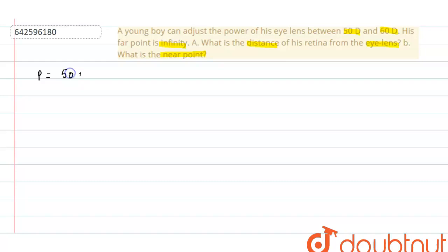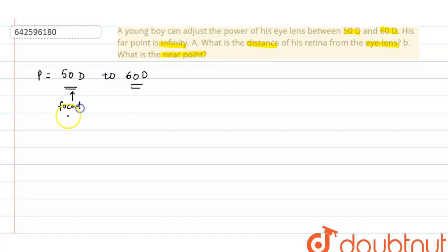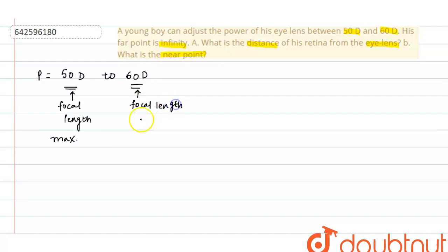The power ranges from 50 diopter to 60 diopter, meaning power is minimum at 50 diopter and maximum at 60 diopter. This implies the focal length is maximum at 50 diopter, because power and focal length have an inverse relationship. So at 60 diopter when the power is maximum, the focal length is minimum.